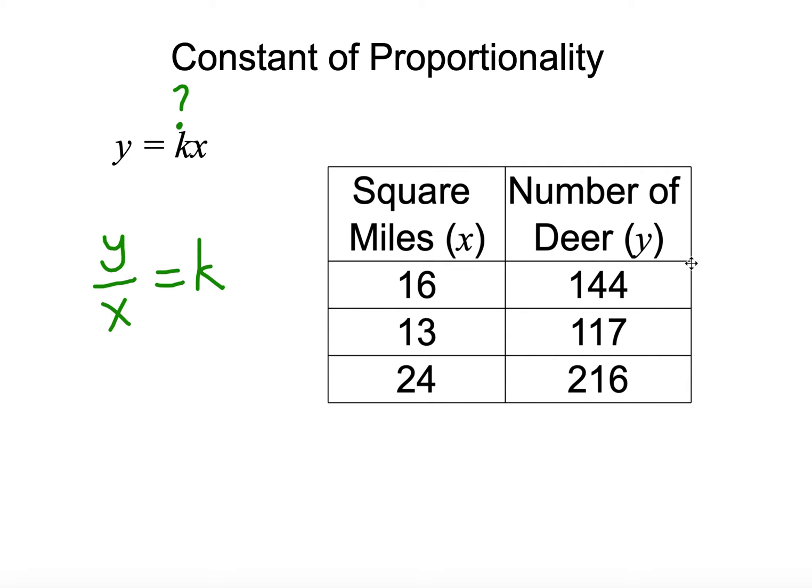So we can use these numbers. If we take 144, and we divide that by 16, it's going to give us an answer of 9. If we take 117, and divide by 13, it's going to give us 9. And if we take 216, and divide by 24, it's going to also equal 9. So we know that our k, our constant of proportionality, is 9. It's also the unit rate. That means there's 9 deer per square mile.